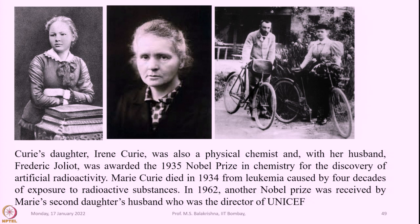Marie Curie died in 1934 from leukemia — blood cancer — caused by four decades of exposure to radioactive substances. In 1962, another Nobel Prize was received by Marie's second daughter's husband, who was director of UNICEF. That means this Curie family has a credit of five Nobel Prizes — a remarkable and unbelievable achievement.